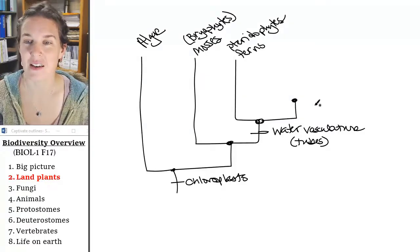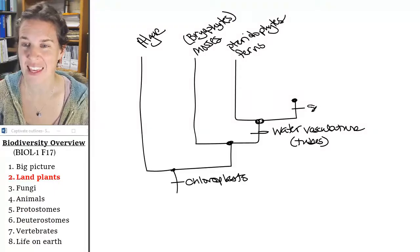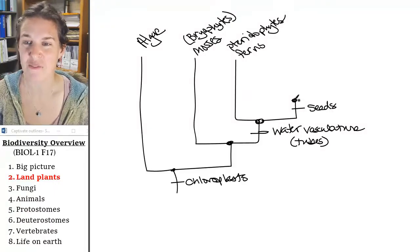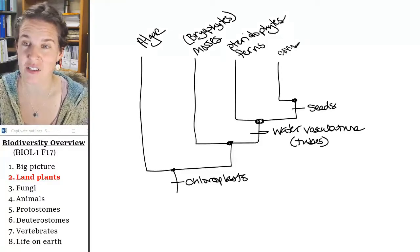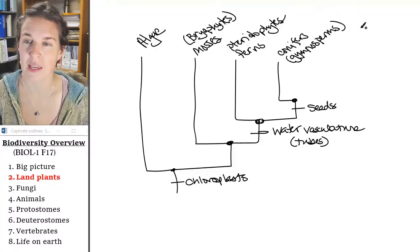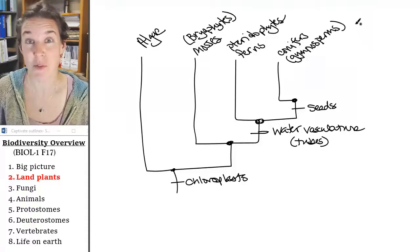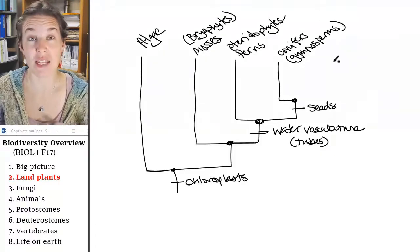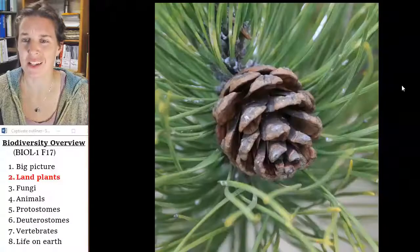The next thing that plants get, and this is really cool, they get seeds, and the first group that branches off from the seeded plants are conifers. These guys are also called gymnosperms. Again, conifer is familiar. It's a Christmas tree, and gymnosperms are the science name of conifers. So take a look at our gymnosperm.